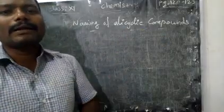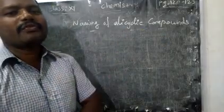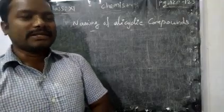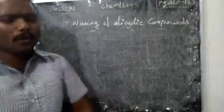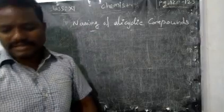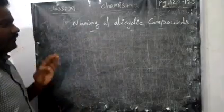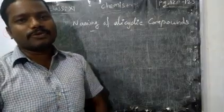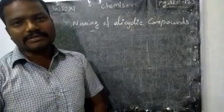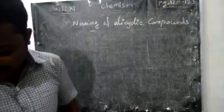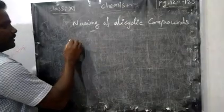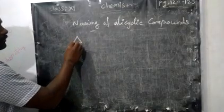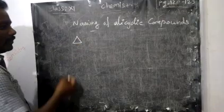For alicyclic compounds, we have rules to follow according to IUPAC. We will see them one by one. First, we may have normal alicyclic compounds with no substituents in the cyclic ring. Very simple — take cyclopropane, for example.